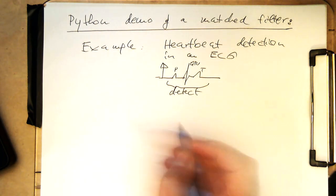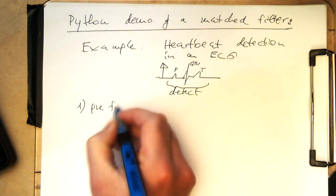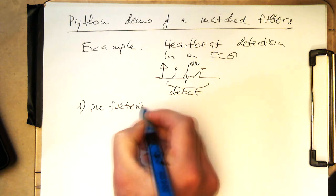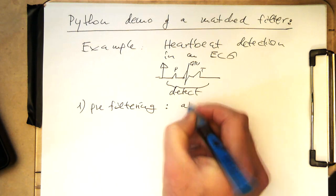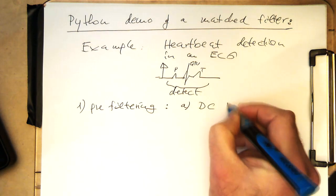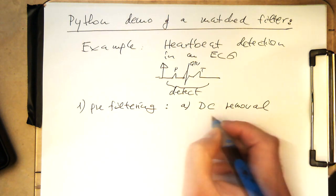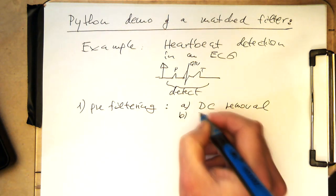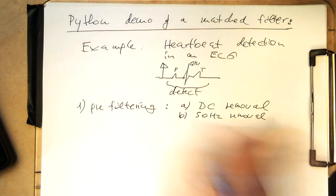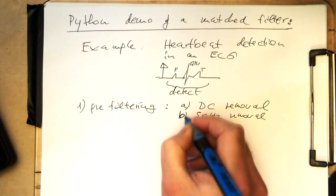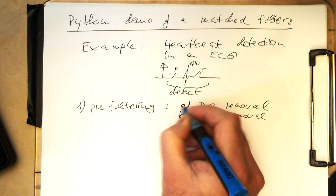So what we need to do is, first we need to do some pre-filtering, and usually especially very important is DC removal because that messes up our threshold, and then 50Hz removal, similar to what I've shown before with the DFT.